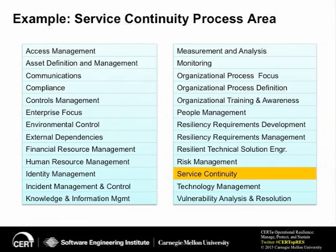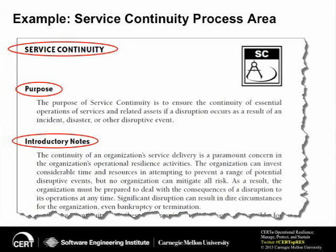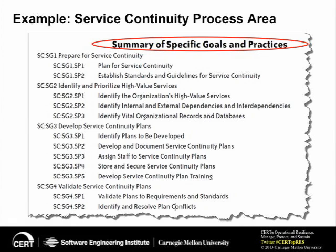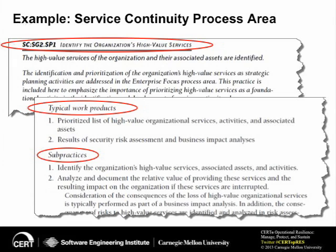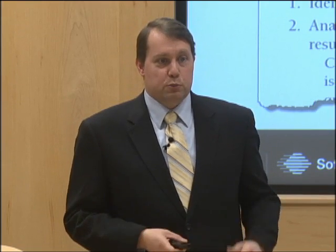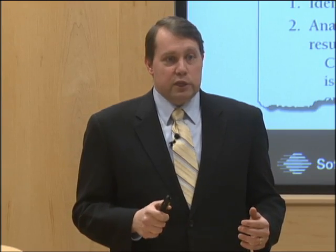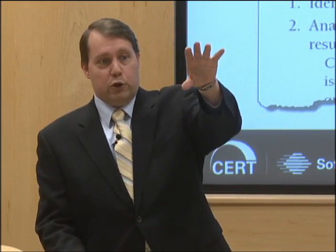We'll take an example out of the list of process areas: service continuity. This is an example page from that process area. There's the purpose, introductory notes, and a list of the specific goals and practices associated with that process area. We're down at this level — the specific goal and specific practice — and then the informative material, the typical work products, and the sub-practices. One might expect to find a prioritized list of the high-value organizational assets as a typical work product, for example, and results of a risk assessment as artifacts, based on the informative content in the typical work products if you're following the guidance for the service continuity process area.